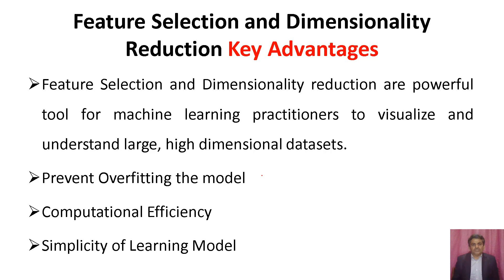Although there are plenty of benefits, I have highlighted a few here. Feature selection and dimensionality reduction are powerful tools for machine learning practitioners to visualize and understand large, high dimensional datasets. These techniques prevent overfitting the model and are useful for reducing the computational complexity. Using these techniques, we can also ensure simplicity of the learning models.